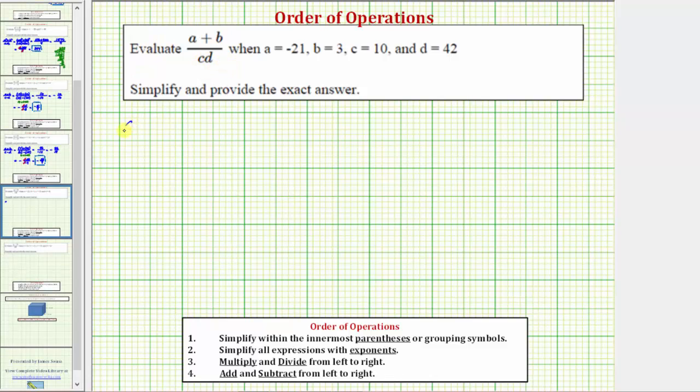So beginning with the expression, the quantity a plus b divided by cd, which means c times d, we'll perform the substitution.